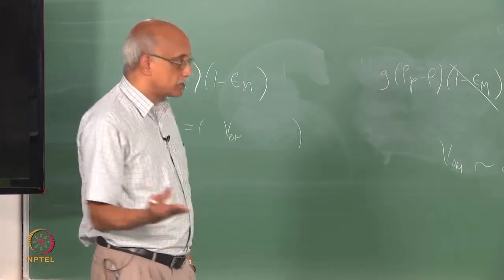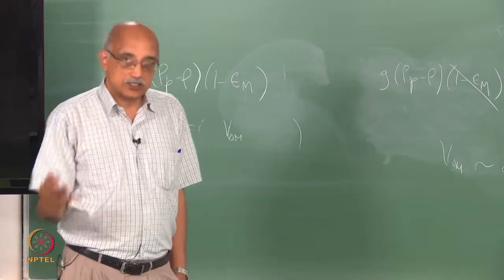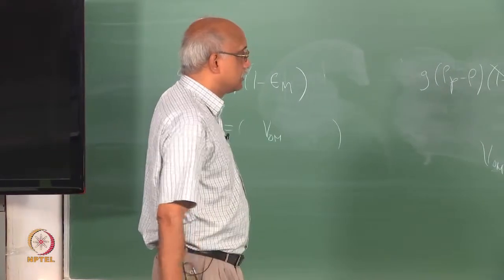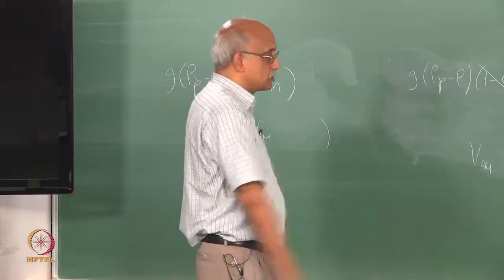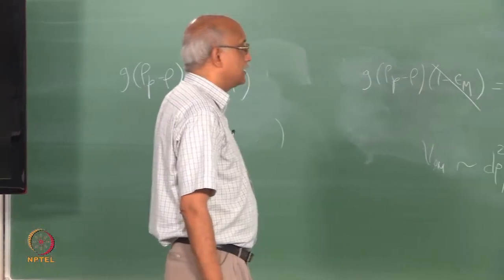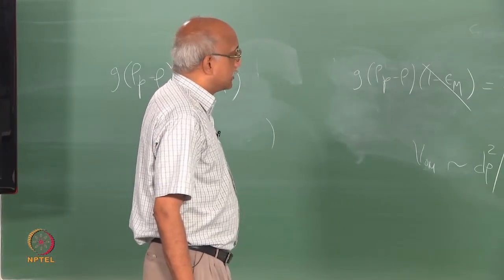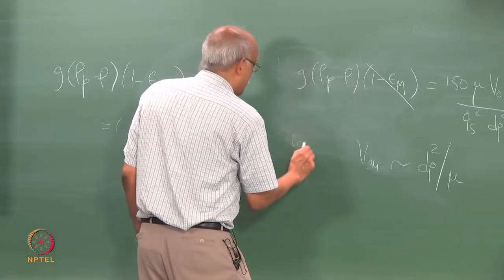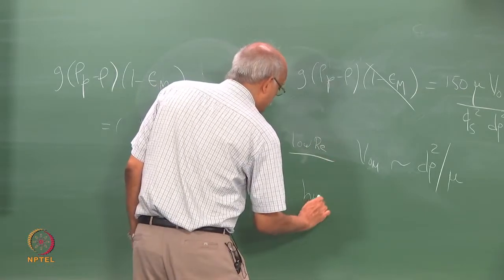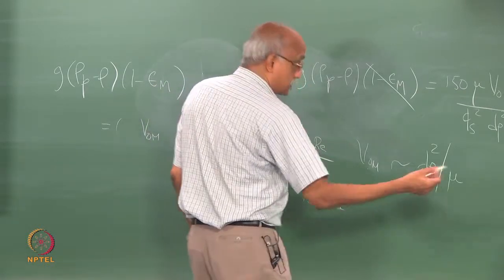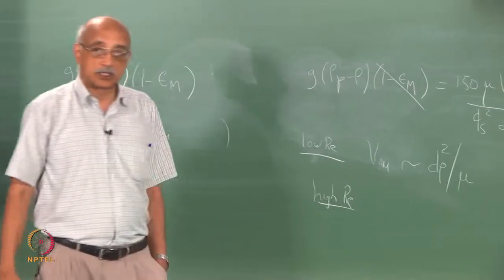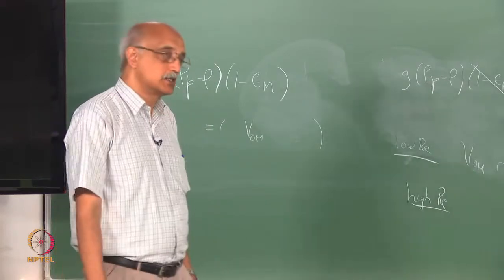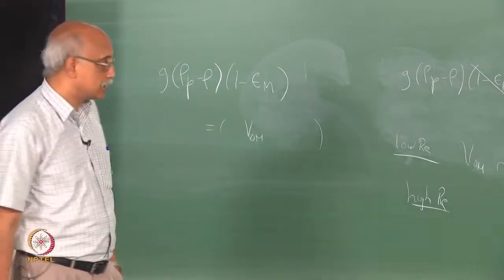For large particles in the high Reynolds number case, viscosity is not a parameter, which is interesting — it basically says viscous effects of the fluid on fluidization are absent at high Reynolds number conditions. V0-M in this case is proportional to dP to the power one-half. So as a function of particle size, the exponent on dP drops from 2 for very small sizes to 0.5 for very large sizes, with intermediate Reynolds numbers giving an exponent somewhere close to linear.